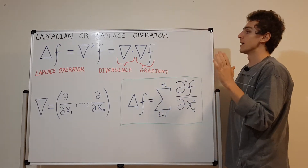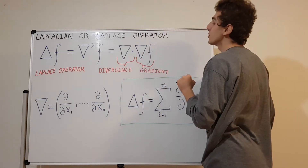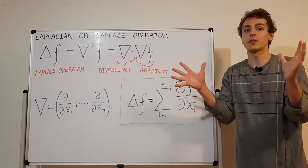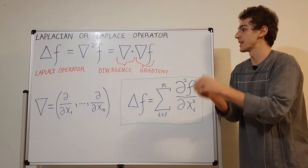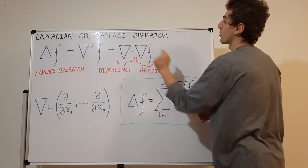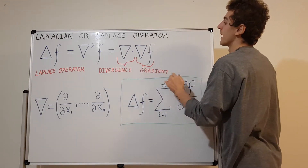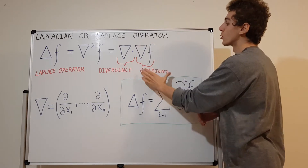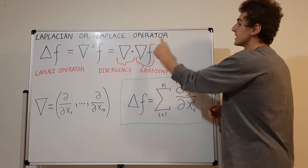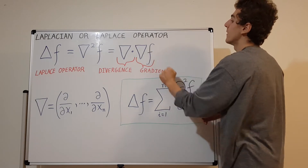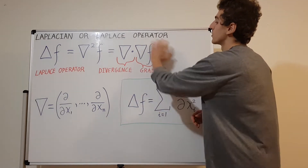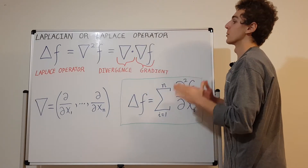The divergence tells you how things emanate from a source or how things go into a sink. Divergence takes the del operator and computes the dot product with a vector quantity. The gradient of F is a vector quantity — it takes the scalar function and turns it into a vector pointing in some direction. Then we take the dot product with the del operator and we get the Laplacian.